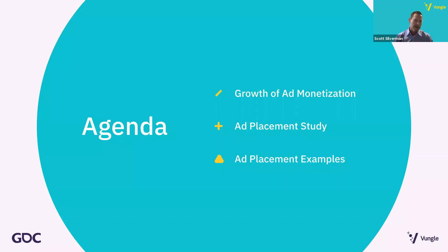In terms of an agenda today, we're going to go over three main things. First, I'm going to go over the continued growth of ad monetization in mobile gaming. I'll shed light on the overall popularity of different ad formats in mobile games, thanks to data from Game Refinery by Vungle, an industry-leading SaaS mobile gaming analytics company we acquired earlier this year. Then I'll talk about a study we conducted of the Vungle network to quantify the eCPM value of various combinations of ad format and ad placement. And finally, I'll highlight some examples of really effective ad placements that incorporate high revenue potential without sacrificing the user experience.